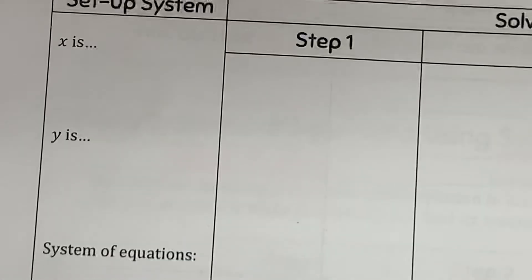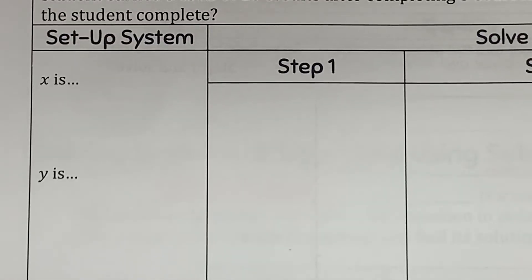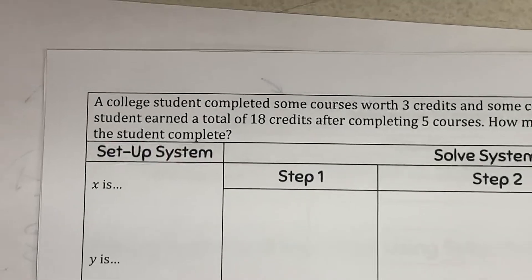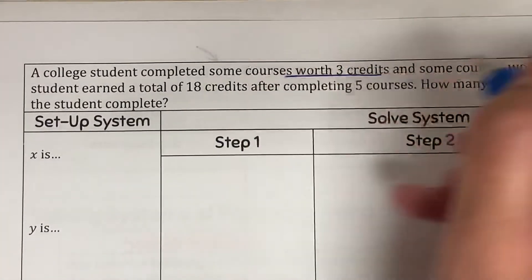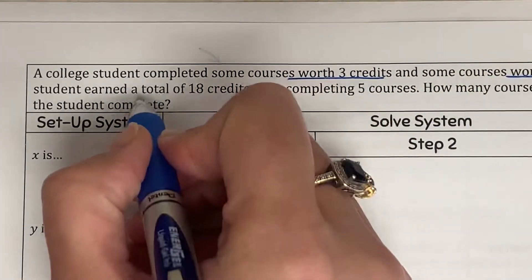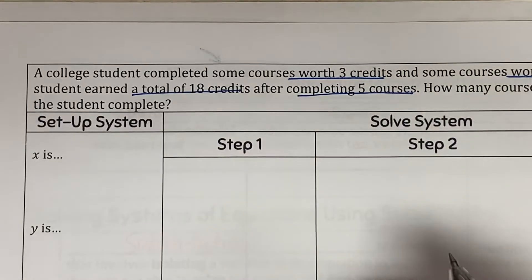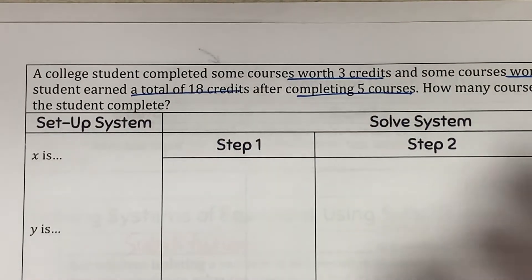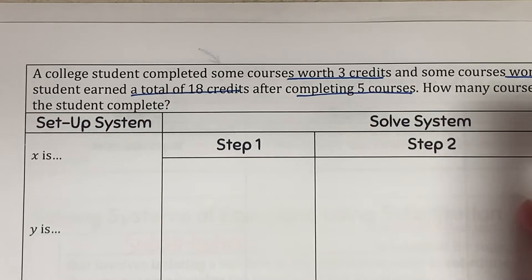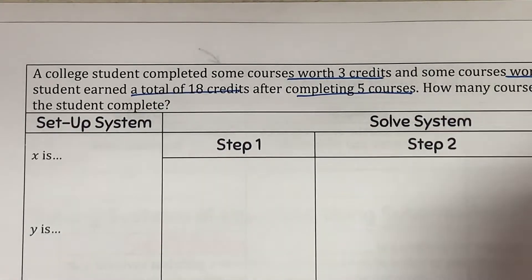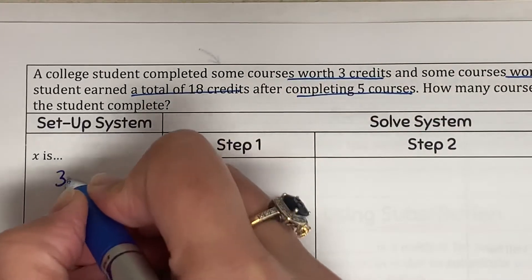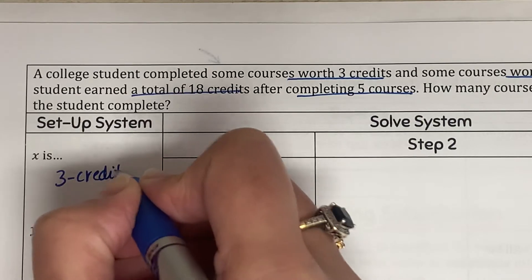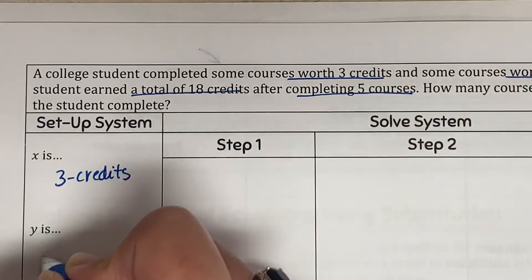I can help you write the equations for the word problem, and then you can solve from there. A college student completed some courses worth 3 credits and some courses worth 4 credits. The student earned a total of 18 credits after completing 5 courses. Let x = 3-credit courses and y = 4-credit courses.